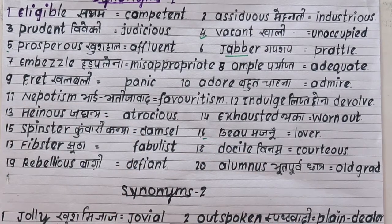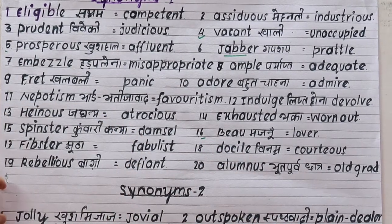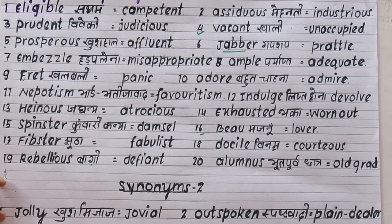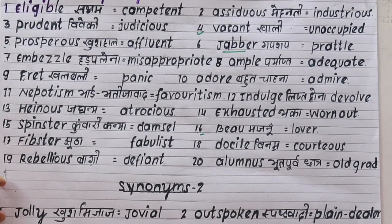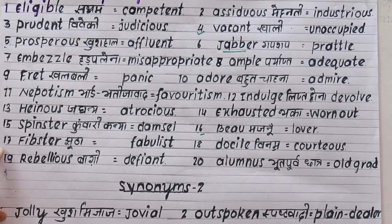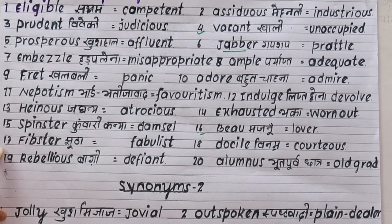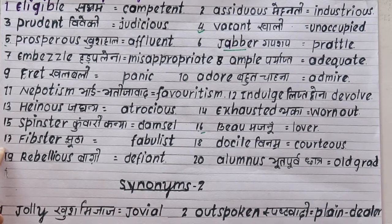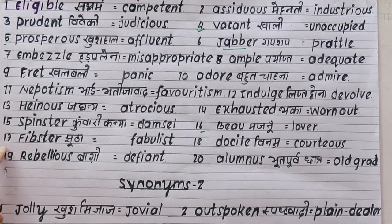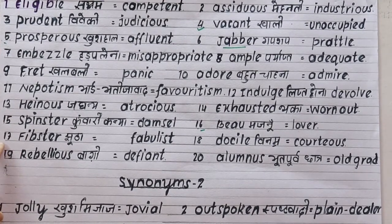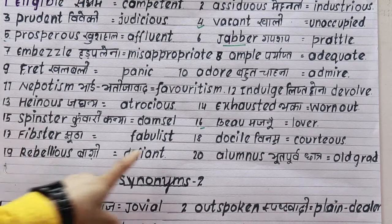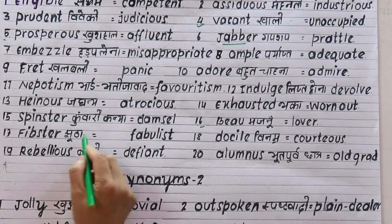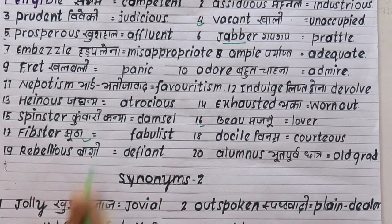Number sixteen is 'beau', spelled B-E-A-U, meaning a lover or boyfriend. For example: he is her beau — her lover. Think of Laila and Majnu — he is her beau.